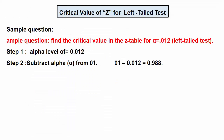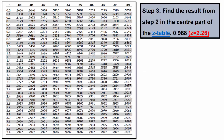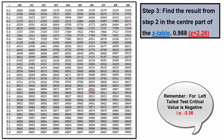Now look at the next example: find out the critical value of Z for a left tail test. In the distribution curve, the left tail test is at the left side of the distribution. This is alpha and this is 1 minus alpha — this is the rejection region and this is the acceptance or fail-to-reject region. Here alpha is 0.012. The next step is to subtract alpha from 1, so 1 minus 0.012 equals 0.988. Now find this 0.988 value in the Z table. This 0.988 value corresponds to 0.9881, and for this value, the two important numbers are 2.2 and 0.06. Therefore our critical value is 2.26.